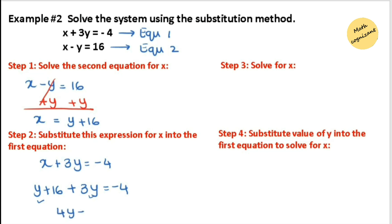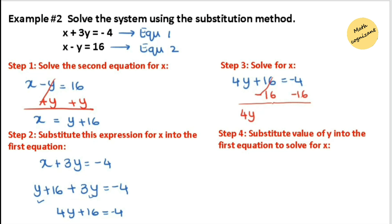Simplify the like terms: y plus 3y gives us 4y, so 4y plus 16 equals negative 4. This is an addition equation, so subtract 16 from both sides. The result is 4y equals negative 20. Be careful with integer signs when simplifying. Since this is a multiplication equation, divide both sides by 4. The 4s cancel and the value of y equals negative 5.